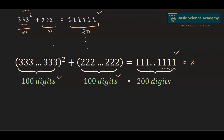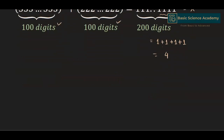Hence, the sum of the last 4 digits equals 1 + 1 + 1 + 1, which equals 4. Hence, the answer is 4.